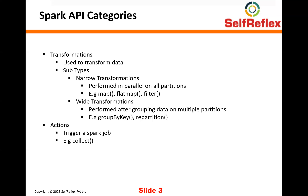There are two sub-types within transformations: one is a narrow transformation, another is a wide transformation. A narrow transformation is basically something which can be applied to a partition of data independent of other partitions — it's not dependent on any other partition. Independently, you can process a partition of data without even thinking about what's happening with the other partitions. For example, if you just want to square every number in an RDD, squaring one number is not dependent on any other number present in any other data partition. You can process all the partitions in an RDD in parallel at the same time. So these are called narrow transformations.